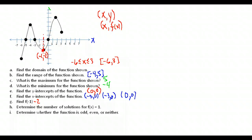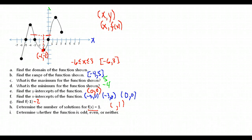The next question says: determine the number of solutions for f(x) = 1. We want to know how many times on this graph there is a point (something, 1), since f(x) is our y-value. The easiest way is to draw a horizontal line at y = 1 and count how many times it crosses the graph — it crosses at two points, so the answer is two.